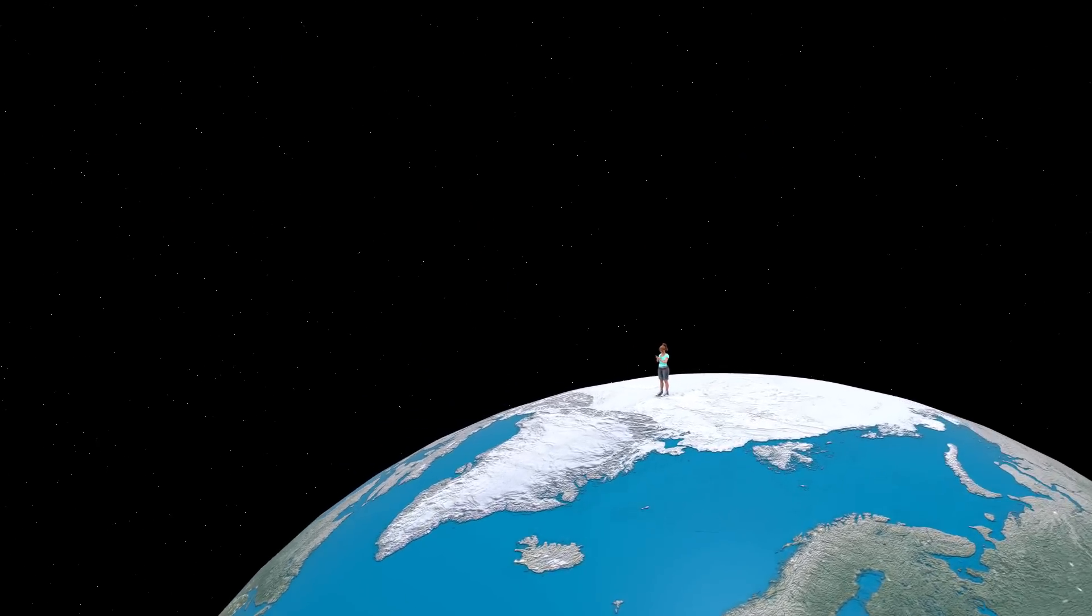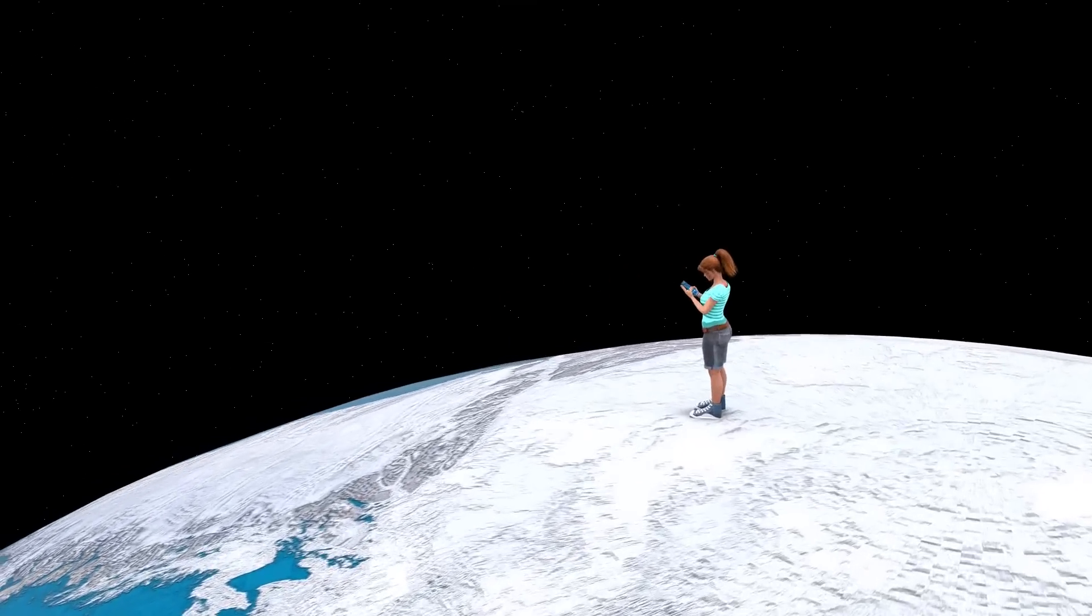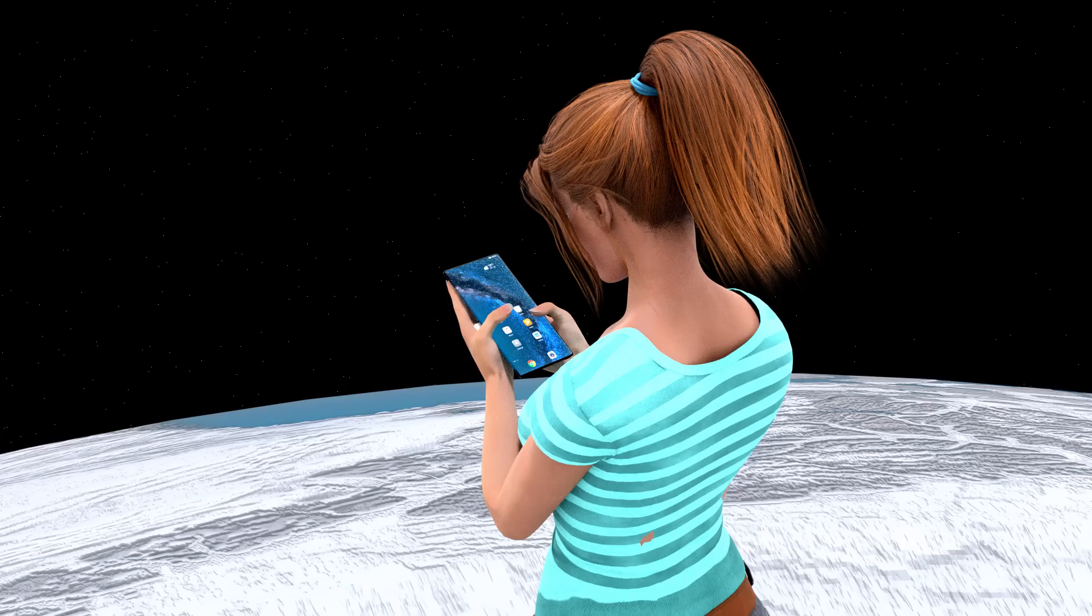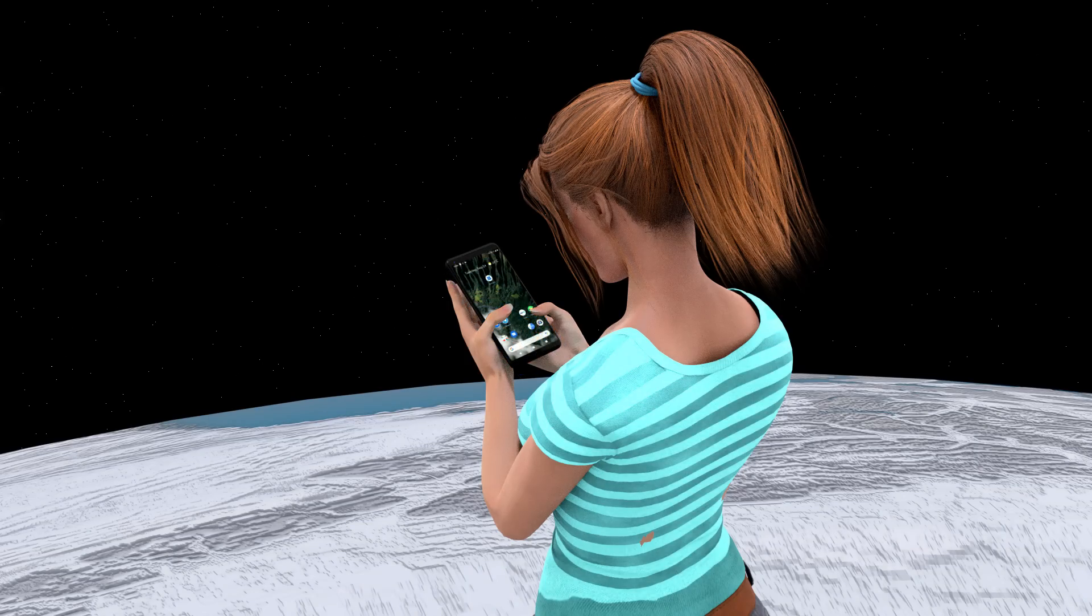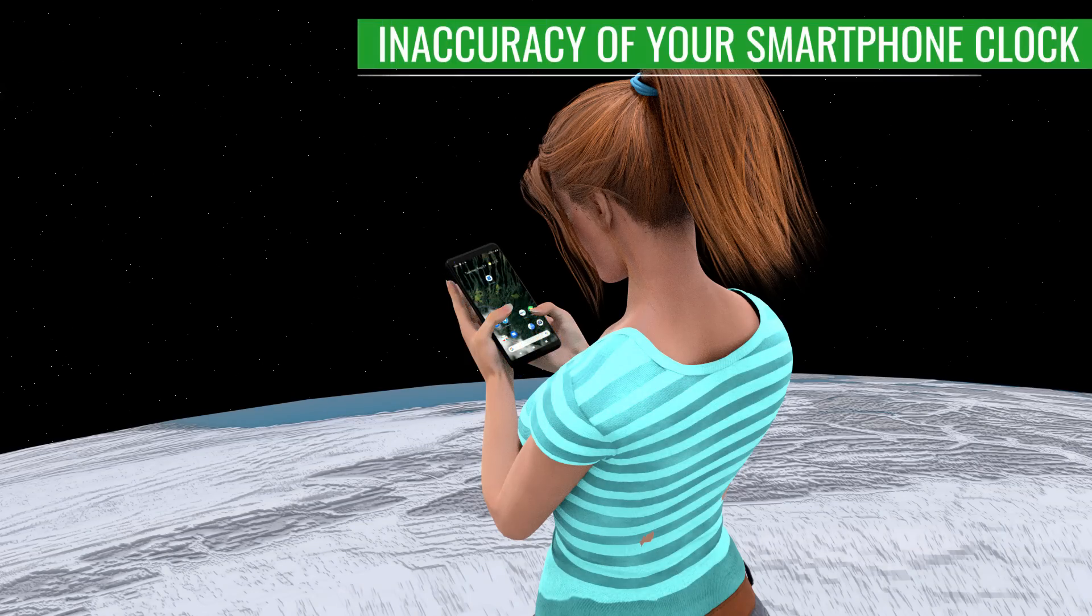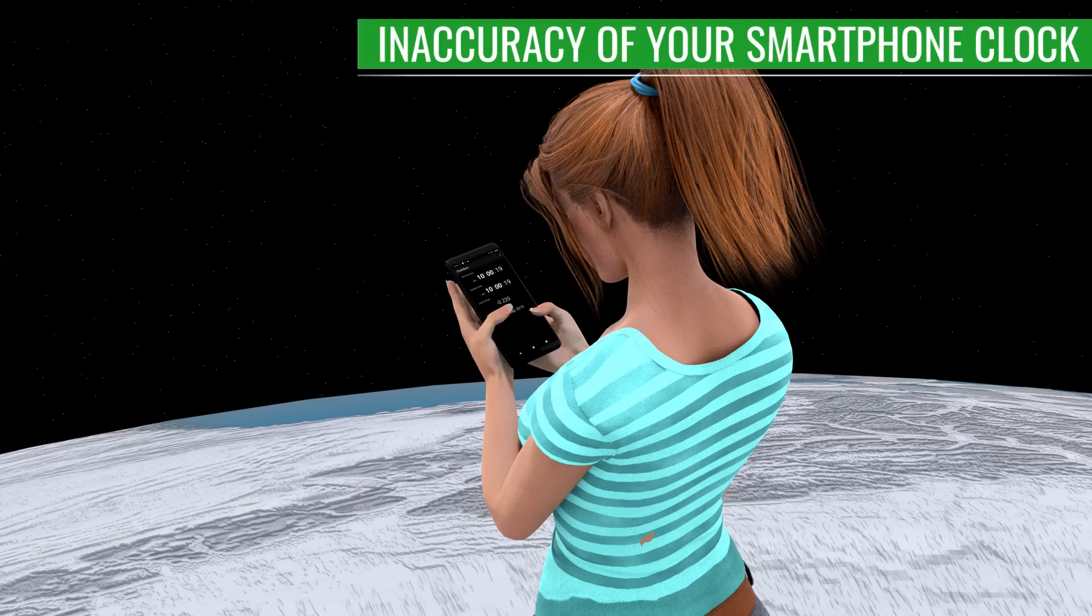Here comes the main issue. Your receiver does not have a highly accurate clock. Your mobile phones or laptops work on crystal clocks that are not accurate when compared to atomic clocks. Having an atomic clock in a smartphone is simply impractical.